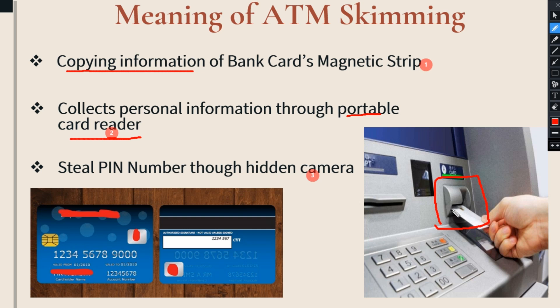What the fraudsters will do is they will use a duplicate portable card reader to steal the information from the magnetic strip. The fraudsters will insert the duplicate portable card reader over this particular slot — they will put the duplicate portable card reader over the original card reader. In another image I will show what this duplicate portable card reader looks like.